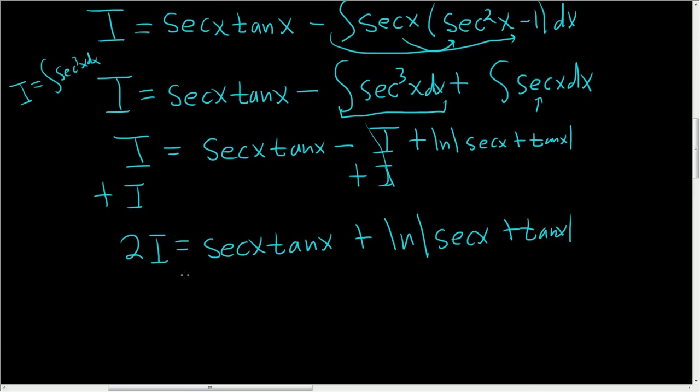To finish divide by 2 and add the plus c. So i is equal to secant x tangent x plus the natural log of the absolute value of secant x plus tangent x.